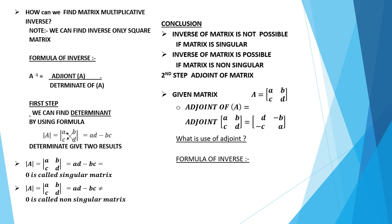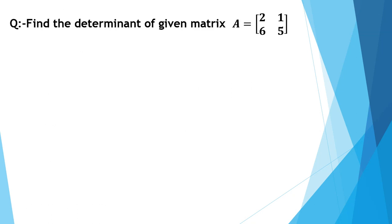The formula of inverse is: A inverse equals adjoint of A divided by determinant of A. This is the use of the adjoint in multiplicative inverse. Now we start the question: find the determinant of the given matrix A.